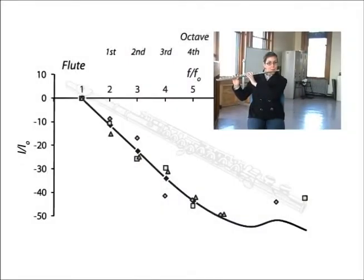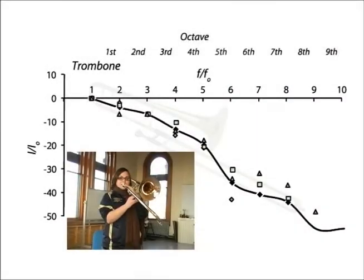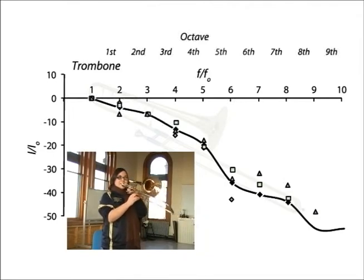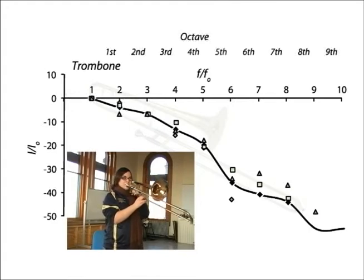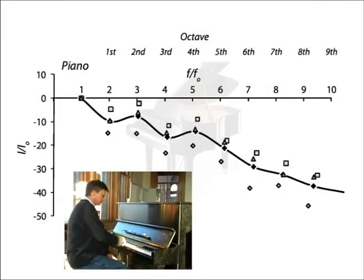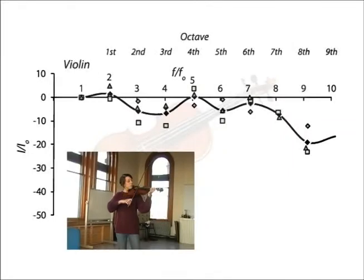The flute is the simplest, with overtones declining steadily in intensity from the fundamental tone, which is the loudest. The trombone spectrum is like the flute's — a strong fundamental tone, but with a steadily declining intensity of the higher octaves. The piano spectrum is similar, but now the third and fifth octaves are slightly amplified. The violin spectrum is flatter, with the first ten overtones being roughly similar in intensity. The second, fifth, and seventh octaves, in fact, are slightly louder than the fundamental tone.